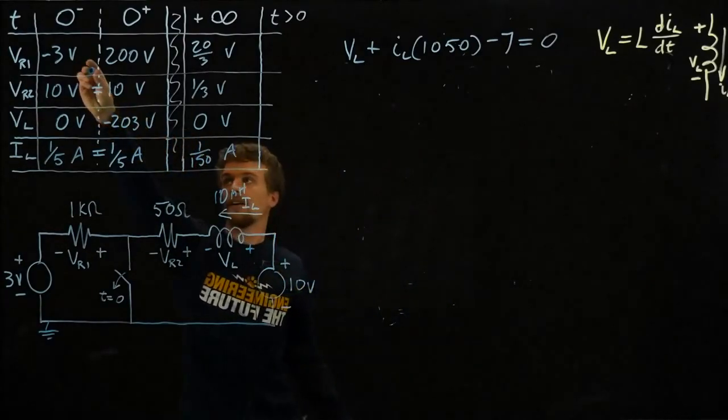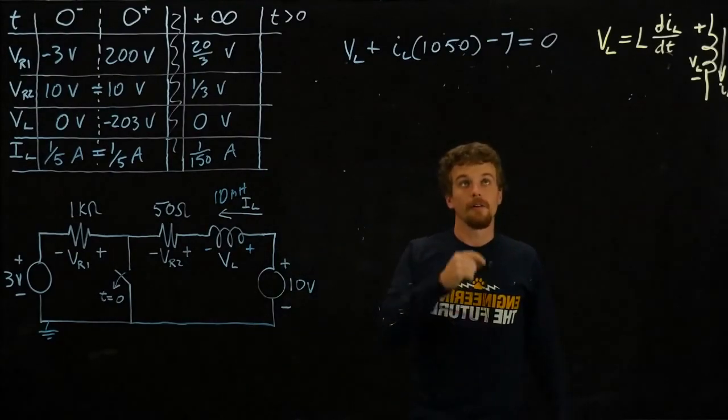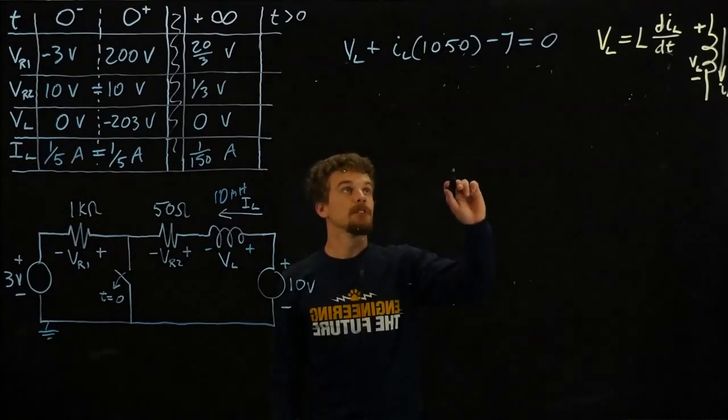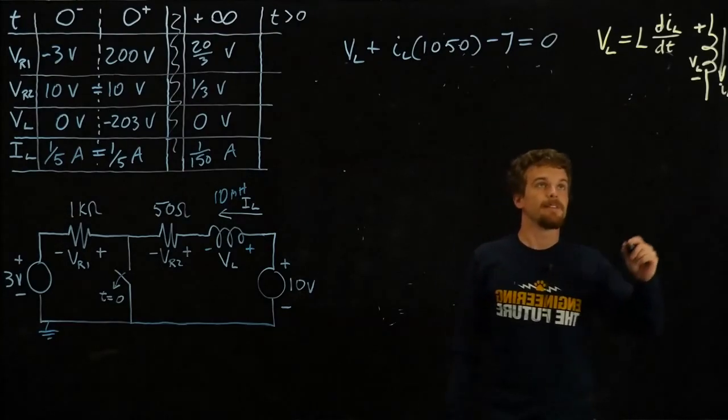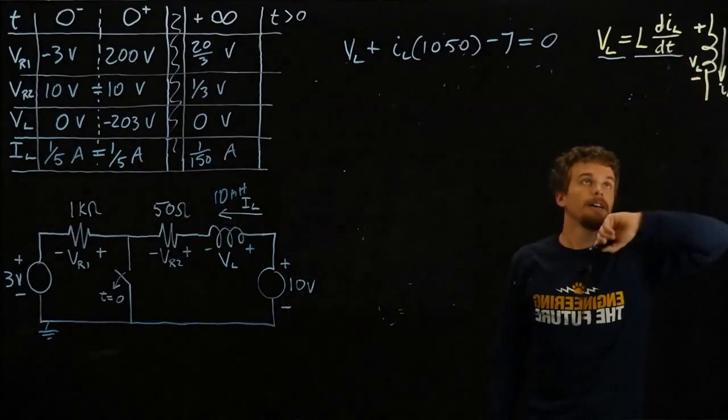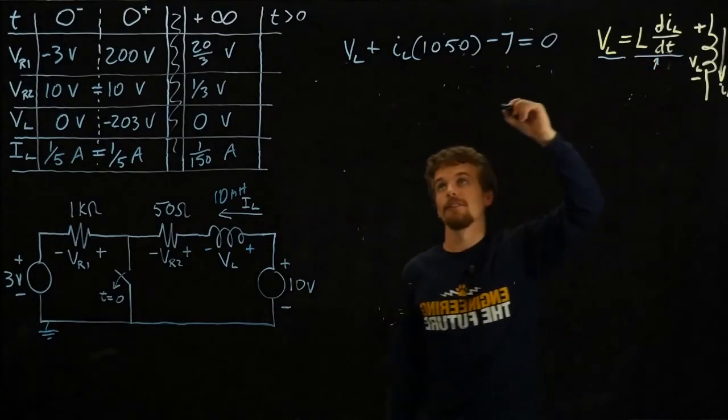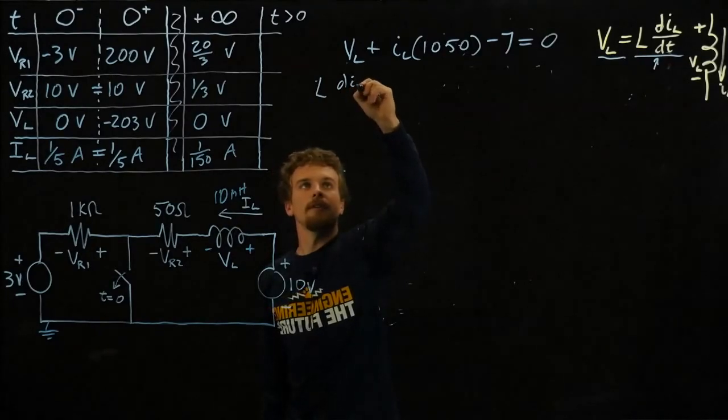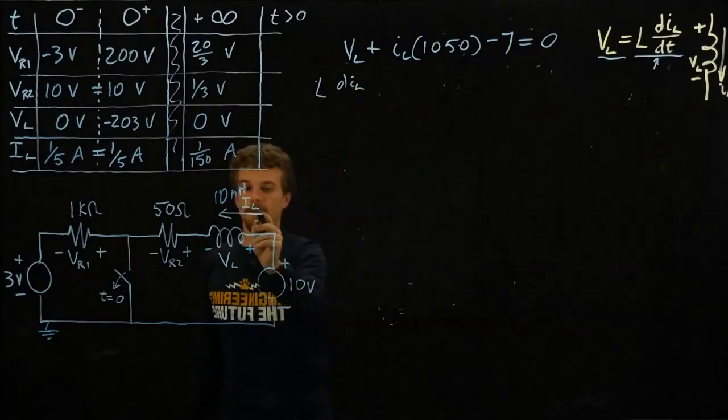That is an equation that's true for all instances in time. We're not only working with 0 minus, 0 plus, or infinity anymore. We're working at all given or all possible times. So let's rearrange this a bit. What is VL? We can see from this equation that VL can be described by a derivative of current, so we'll substitute this in.